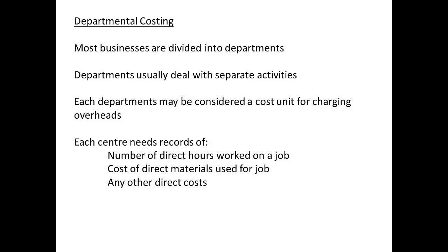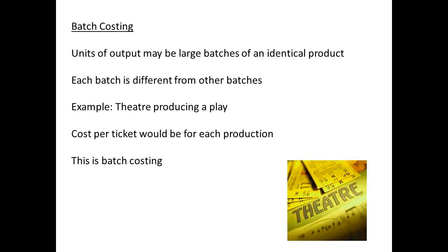Most businesses consist of more than one department, and each department can often be considered as a cost unit. If each department acts as a cost centre and records direct hours, direct materials, and any other direct costs, then we have the necessary information to start allocation of costs to cost centres. In some cases, a business may be involved in treating each job separately, and in this case we say that we are able to carry out batch costing. A theatre producing plays will treat the tickets for each different production as a batch for costing purposes.